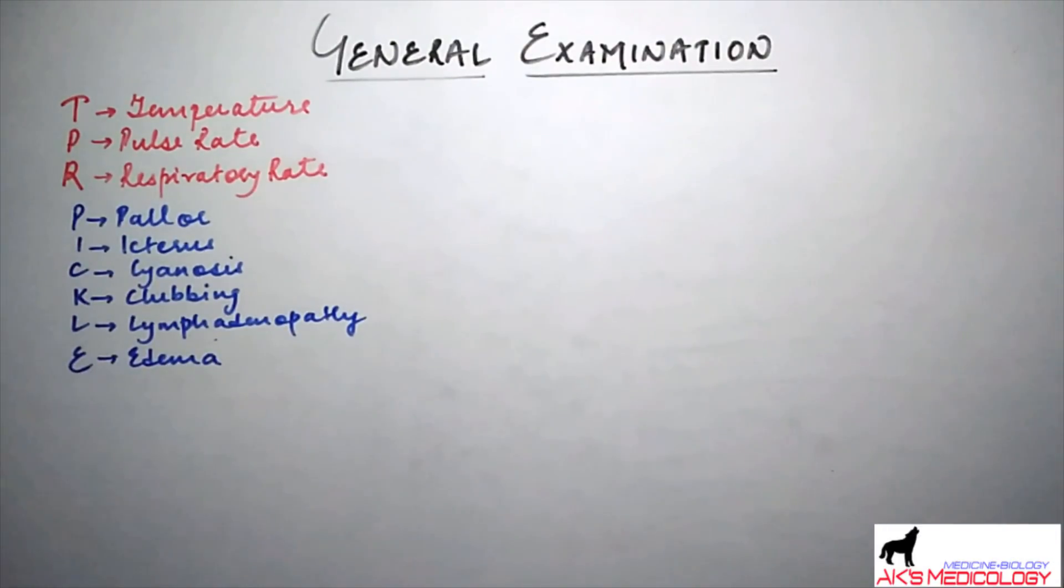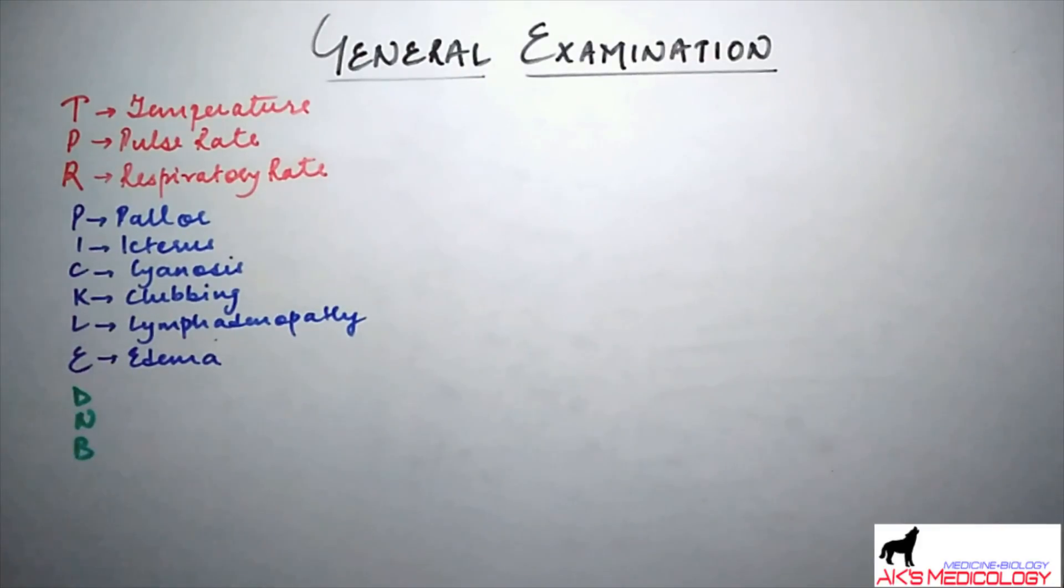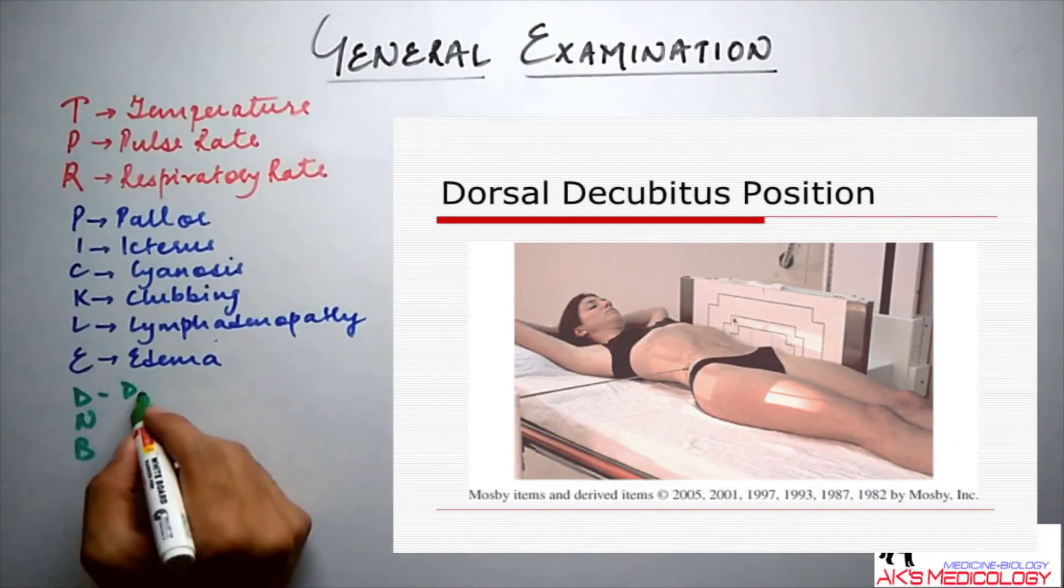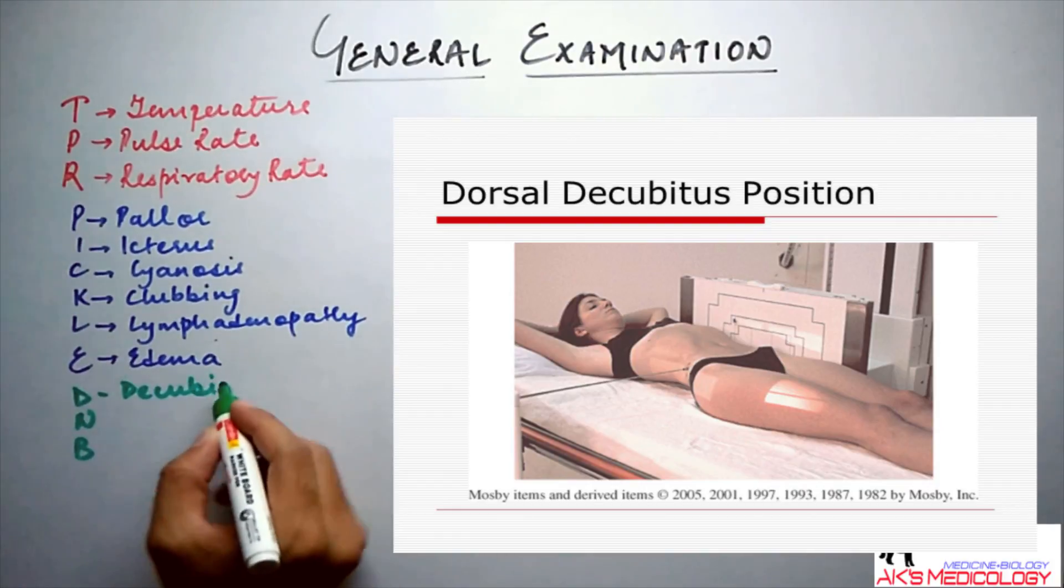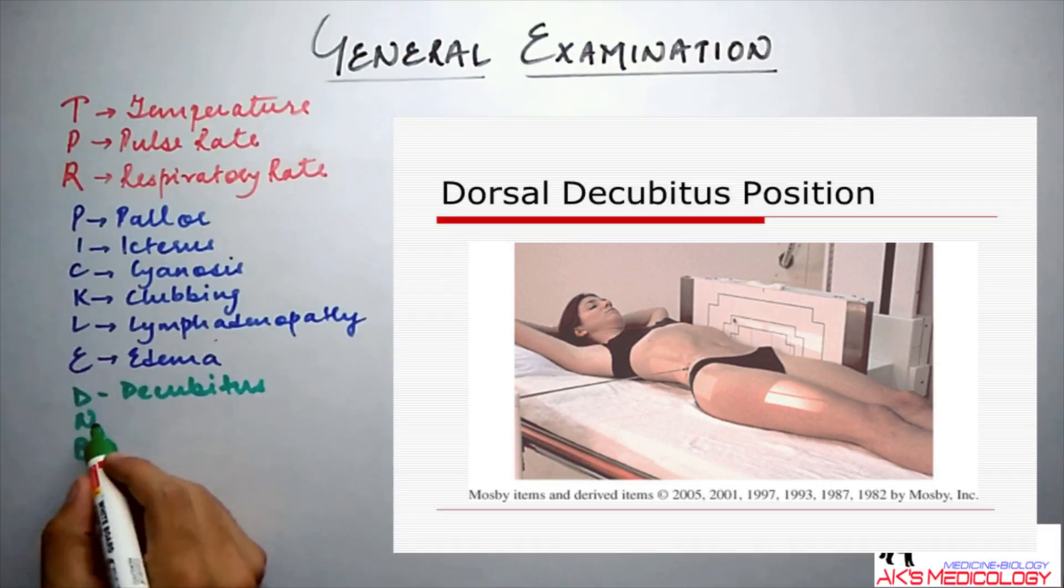Now moving ahead in the general examination, other key points could be remembered with the help of the mnemonic DNB. D here stands for decubitus, which is the position of the patient while in supine position.